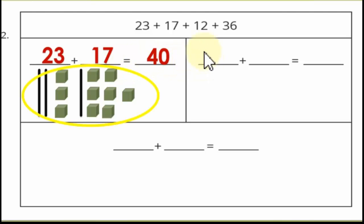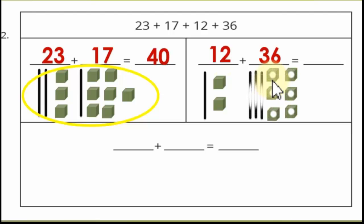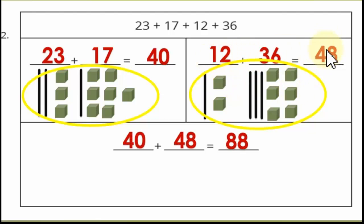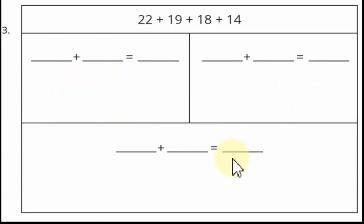What about 12 plus 36? We can express 12 as 1 stick (1 ten) and 2 cubes (2 ones). Express 36 as 3 sticks (3 tens) and 6 cubes (6 ones). Now 2 plus 6 equals 8 ones, and 1 plus 3 equals 4 tens. So 12+36 = 48. Then 40 plus 40 equals 80, and 0 plus 8 equals 8. The result is 88.